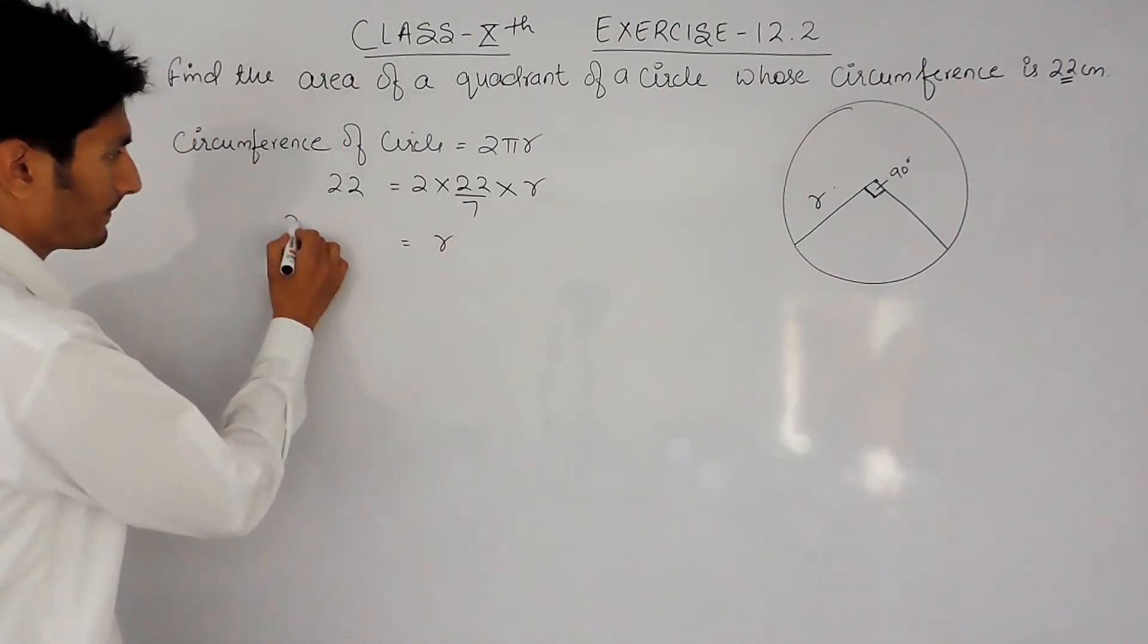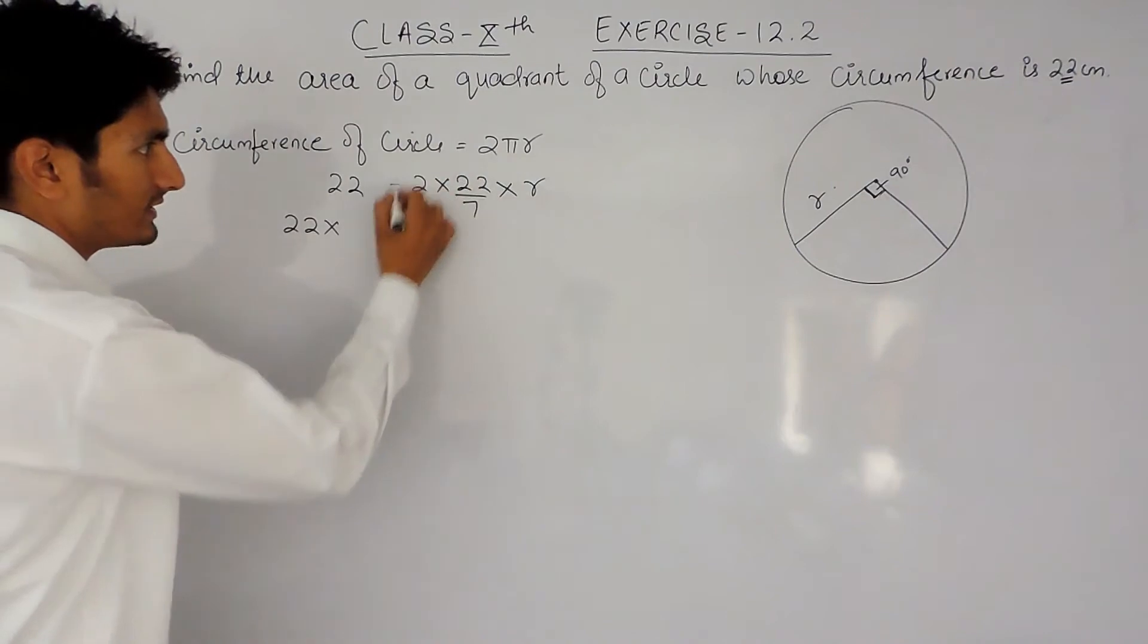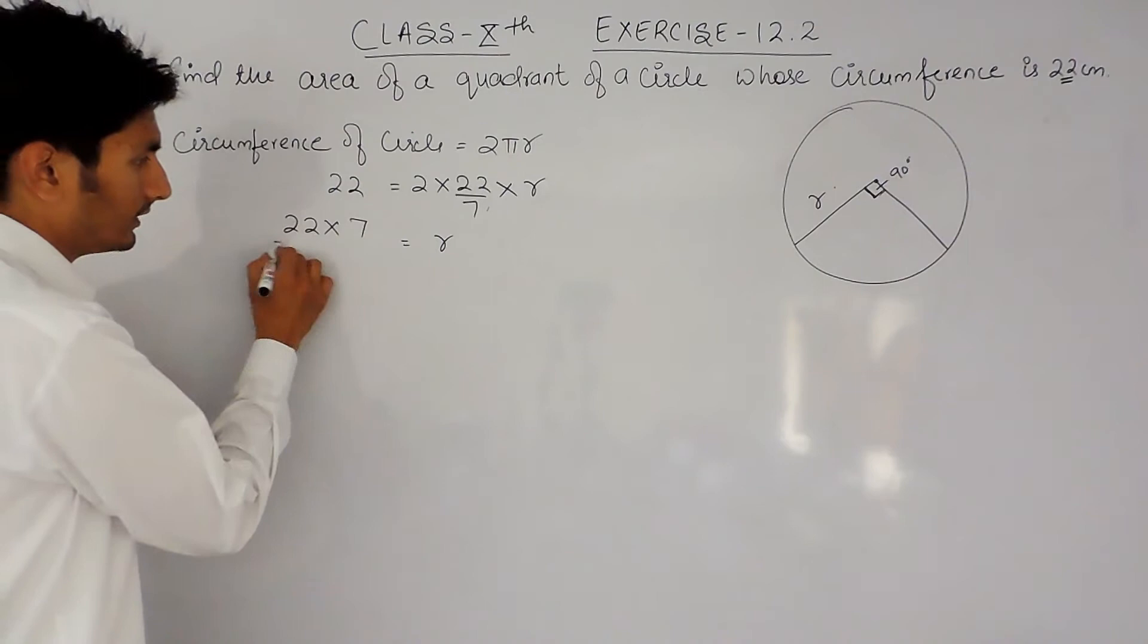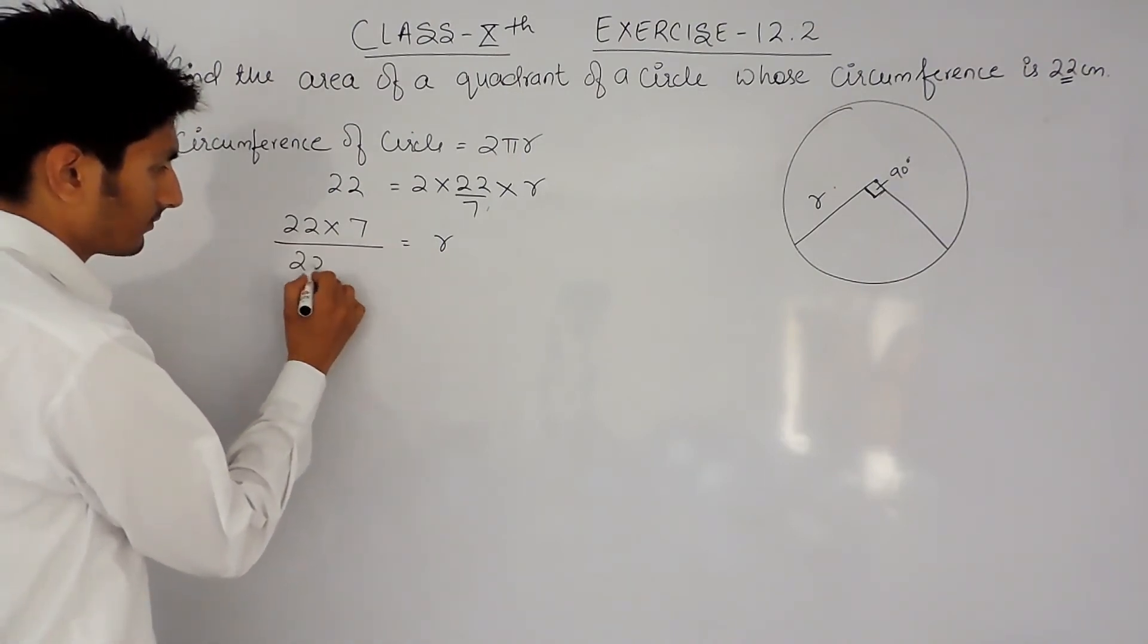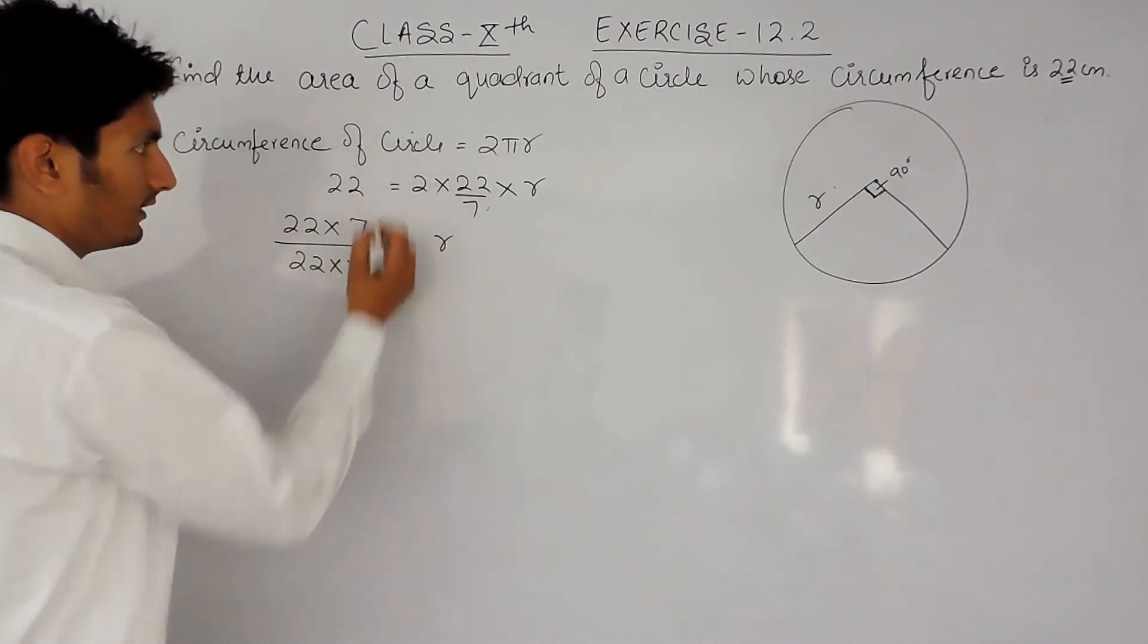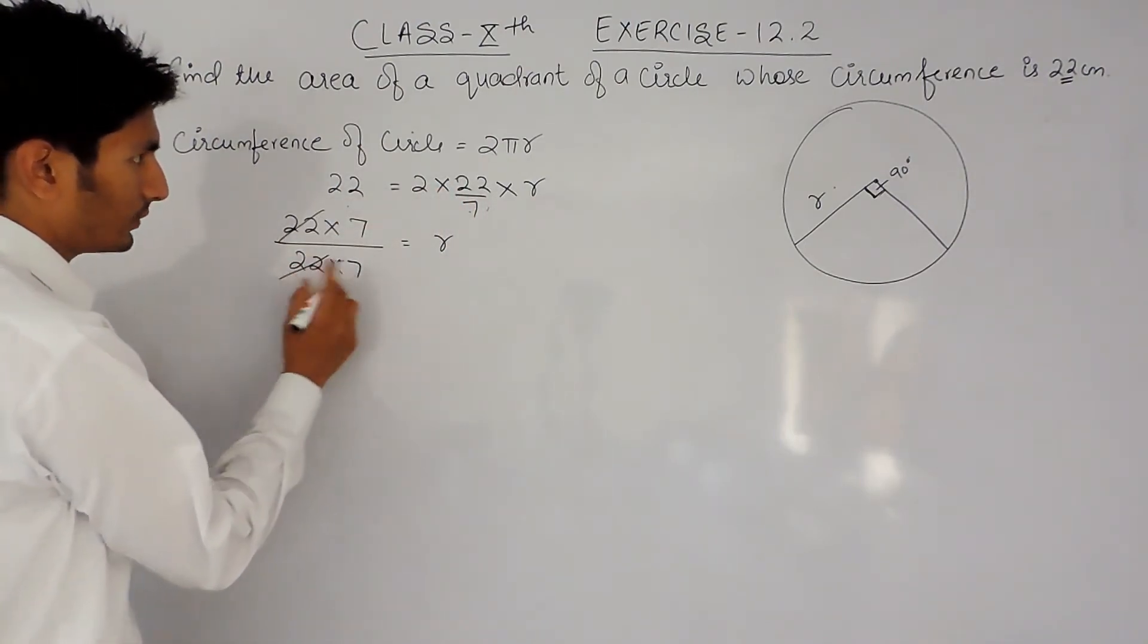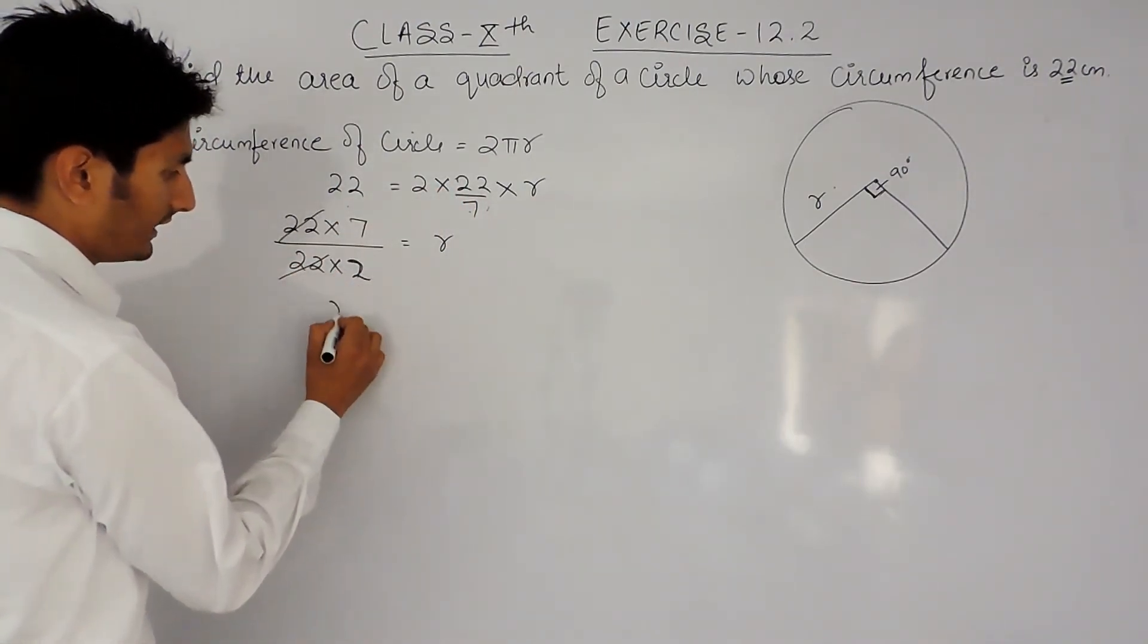Now if you have to find the value of r, obviously this fraction when shifted to that side will become reciprocal. 7 will multiply here and 2 will divide here, so 22 can be cancelled by 22. So the radius will be 7/2 centimeters.